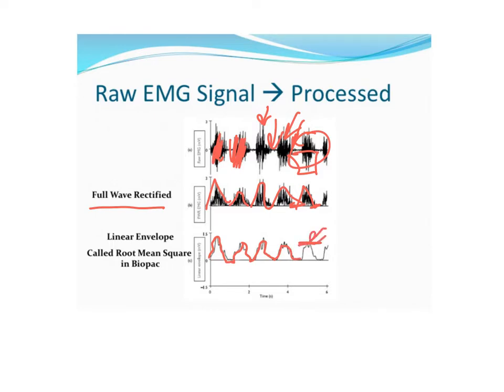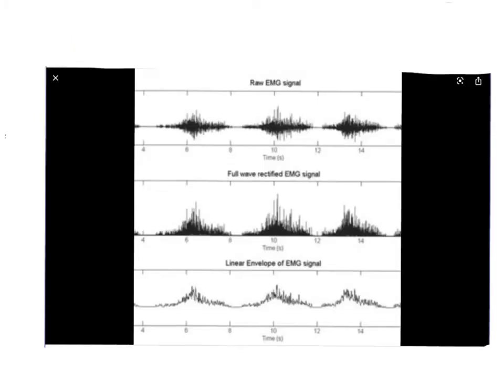Here's just another view. Again, we can see the raw EMG here. There's a burst of activation, pause, activation, pause. Then you go to the full wave rectified signal, so all the negative signaling is deleted out and everything is positive. And then you go through a linear envelope which just basically smooths the curve so you can see the nice contractions.